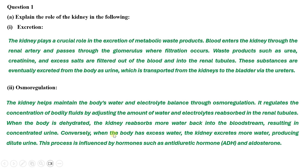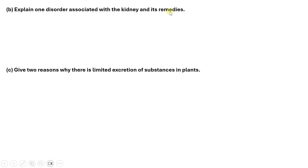The role of the kidney in osmoregulation: the kidney helps maintain the body's water and electrolyte balance through osmoregulation. It regulates the concentration of bodily fluids by adjusting the amount of water and electrolytes reabsorbed in the renal tubules. When the body is dehydrated, the kidney reabsorbs more water back into the bloodstream, resulting in concentrated urine. Conversely, when the body has excess water, the kidney excretes more water, producing dilute urine. This process is influenced by hormones such as antidiuretic hormone (ADH) and aldosterone.